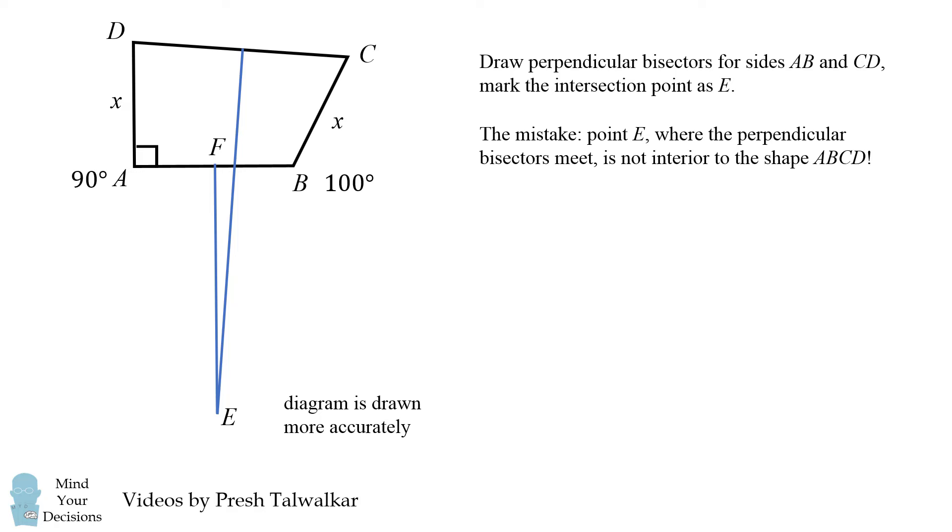Notice they meet but when we mark the point E it's on the exterior of ABCD. The point E where the perpendicular bisectors meet is not interior to the shape ABCD. This is where the mistake in the proof originates.